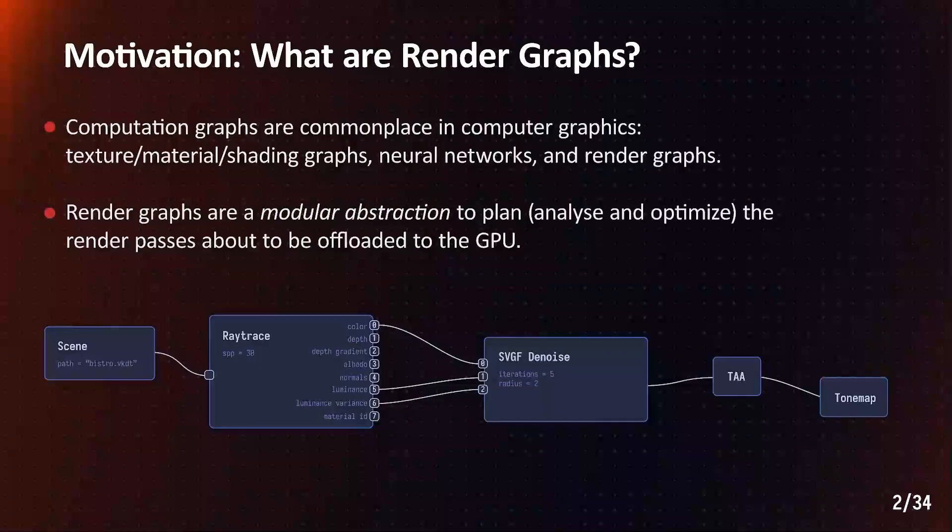Graphical program representations have always been commonplace in computer graphics. Render graphs specifically have become a standard representation for the analysis and optimization of rendering work about to be offloaded to the GPU. An example for a render graph is shown at the bottom of the slide. In these graphs, nodes describe render passes and edges describe data dependencies between their inputs and outputs.